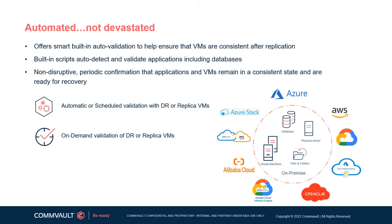Automatic validation can be performed from two sources: either the DR site's virtual machines, or non-disruptively by way of cloning virtual machines. Users also have the added flexibility of being able to perform various simulated tests and queries against them, whether on demand or on a scheduled basis. This is further complemented by in-depth reports so customers can easily determine if the validations have been successful.